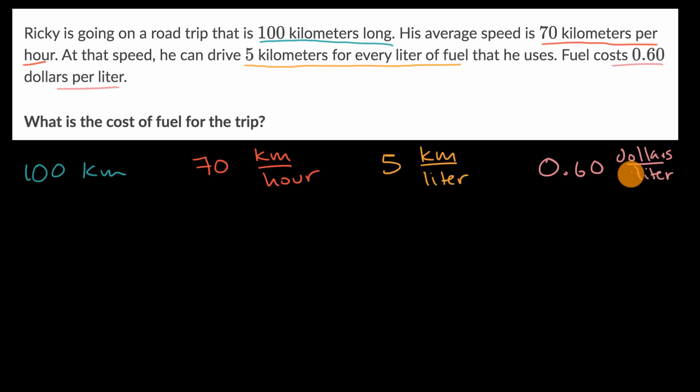Normally we would see that written as 60 cents per liter, but let's just go with it this way. So what's going to be useful for the total cost of the fuel for the trip? We need to figure out how much fuel we're going to use and then multiply that times the cost of the fuel.